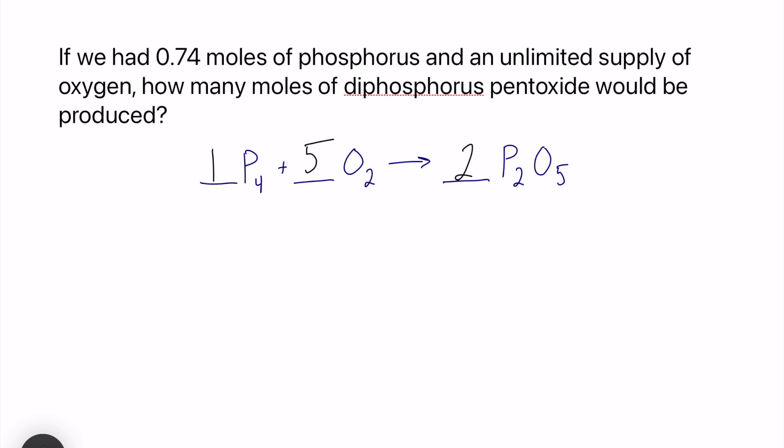We are going to begin with exactly what we know, and we were given 0.74 moles of phosphorus. I'm going to start with 0.74 moles of P4. What the question wants us to figure out is the moles of diphosphorus pentoxide.